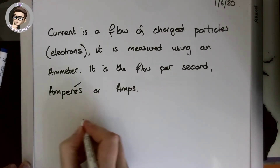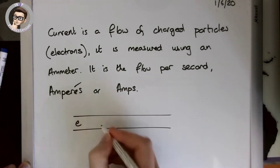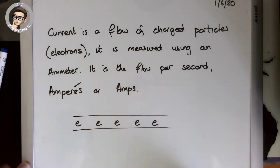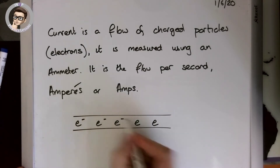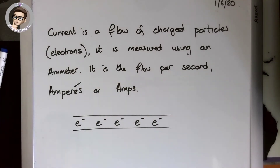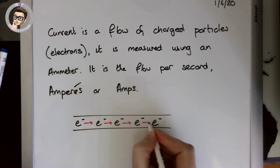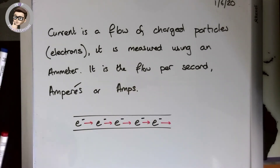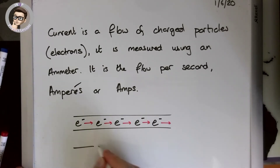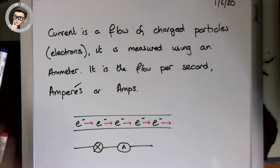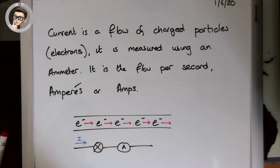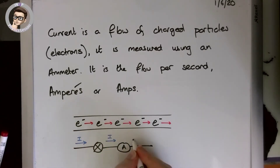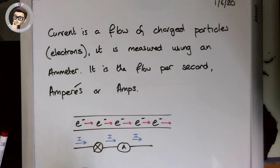What do I mean by current? If I've got my wire, inside of the wire we know there are free electrons — electrons that can move. They all have a charge of minus one. As they move, if there is a flow of them moving through the wire, then that is a current. So we could have a filament bulb and an ammeter, and a current of electrons flowing through — moving through this wire carrying their charge with them. That is what a current is.